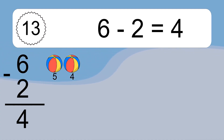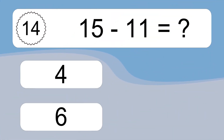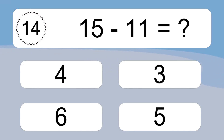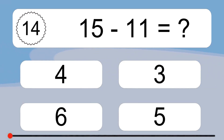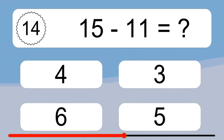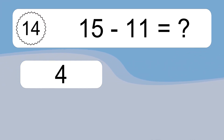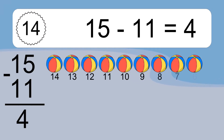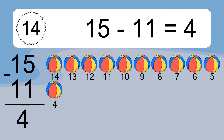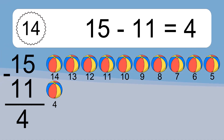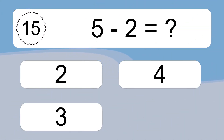6 minus 2 equals 4. Let's count it: 5, 4. 15 minus 11 equals what? 15 minus 11 equals 4. Let's count it: 14, 13, 12, 11, 10, 9, 8, 7, 6, 5, 4.